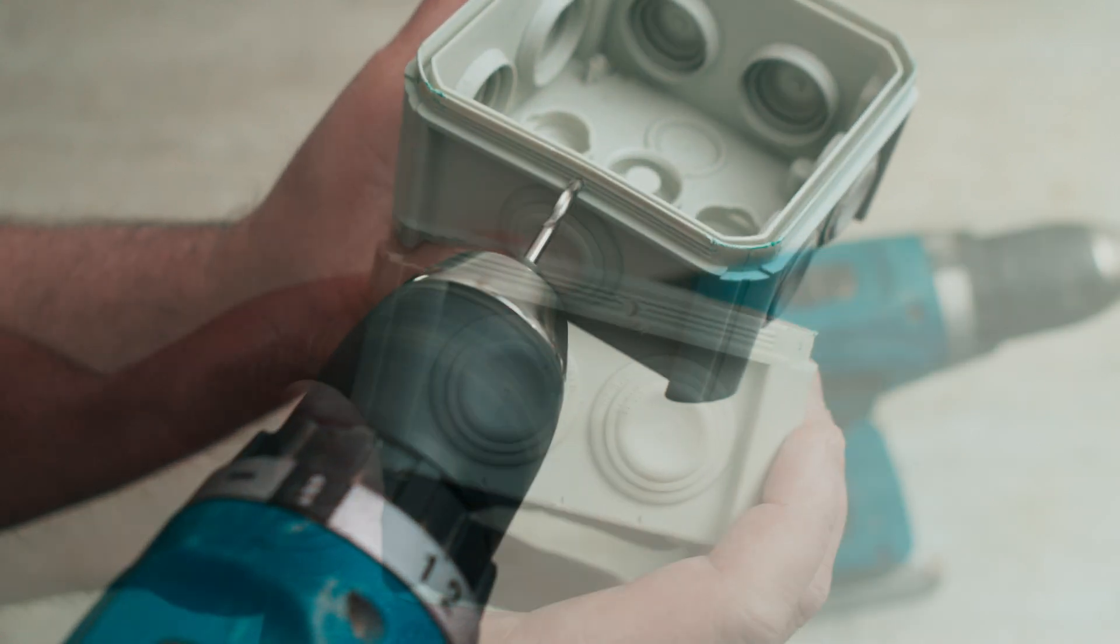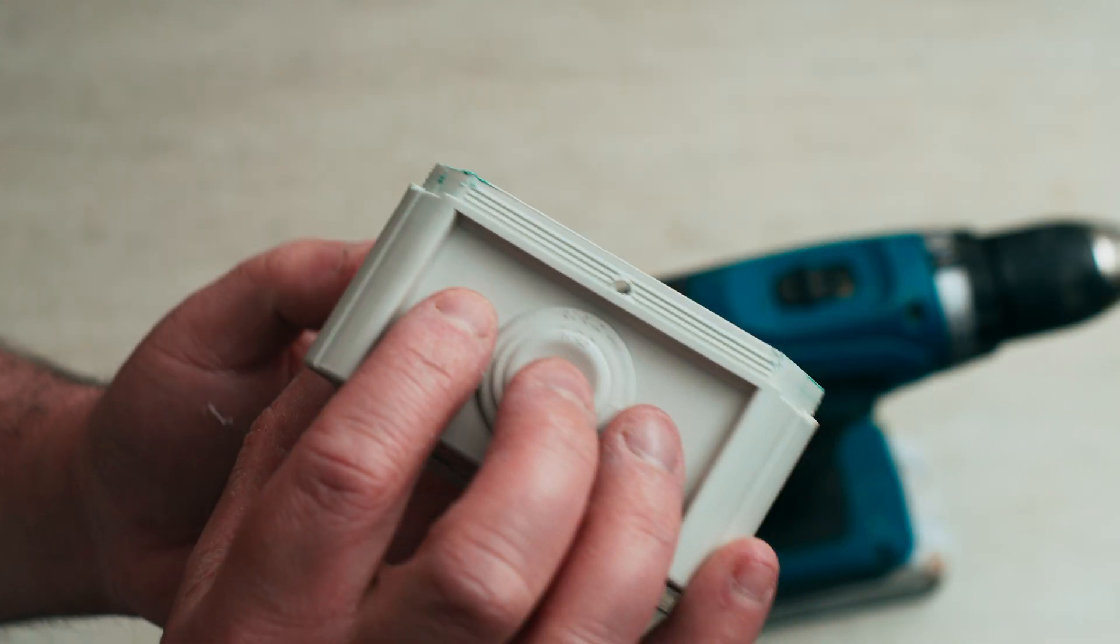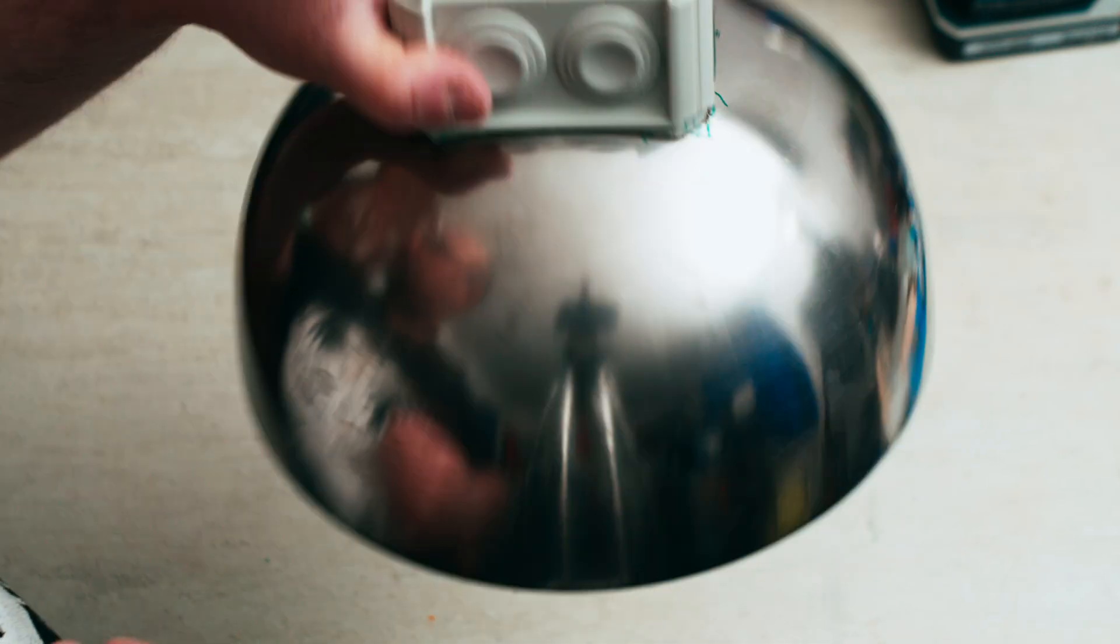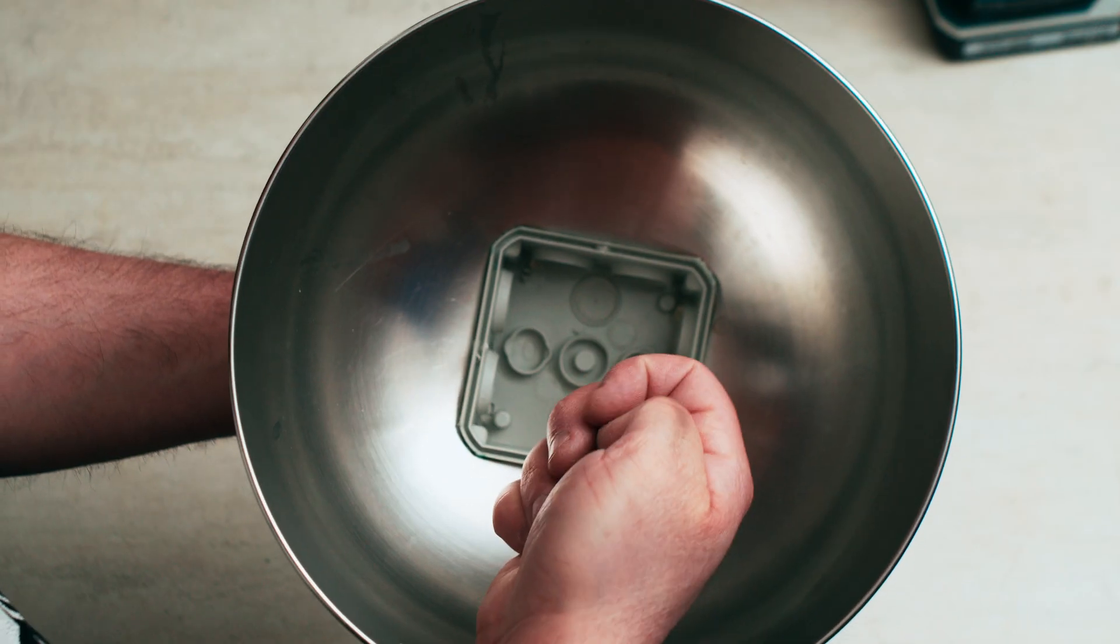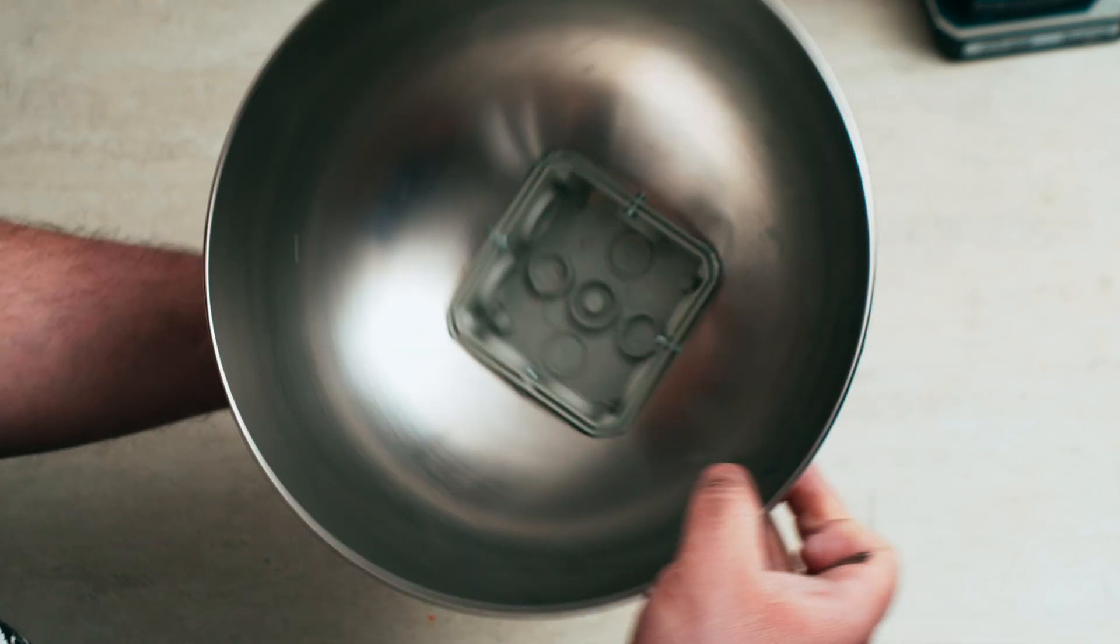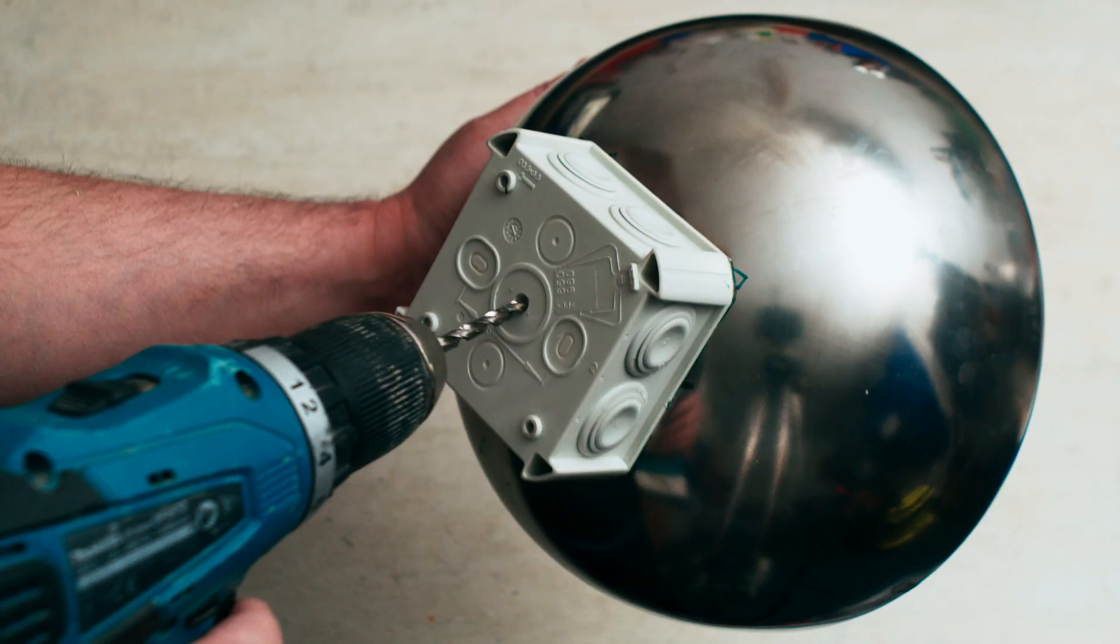Before attaching the junction box, we'll drill a 3 mm hole in each side. Now we screw in the mounting screws. It would be best to also secure them with some CA glue.